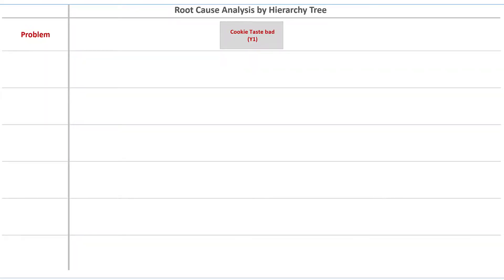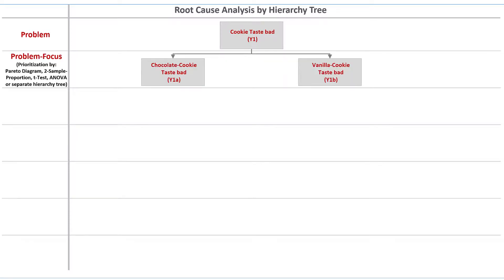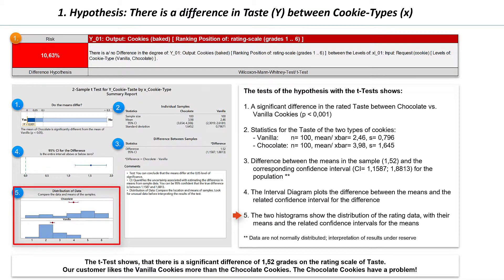Our primary problem, defined in the define phase, is why one cookie tastes bad. Now we can differentiate between the cookie types and focus on the bad taste of chocolate cookies. The differentiation we have uncovered is not yet a cause of our problem, but a specification. In the following, we will only deal with chocolate cookies and exclude vanilla cookies from further analysis — they have no problem. The histograms finally show the separated distributions of the ratings for both cookie types, with the respective means and the confidence intervals around the means.